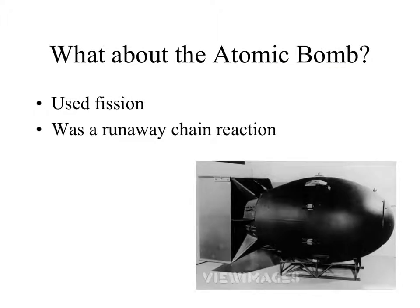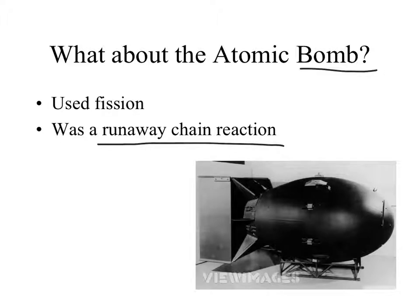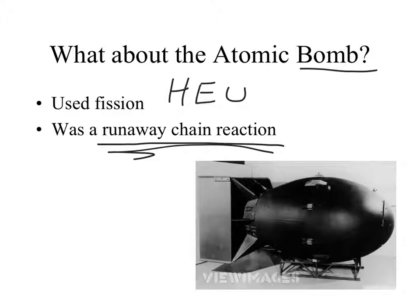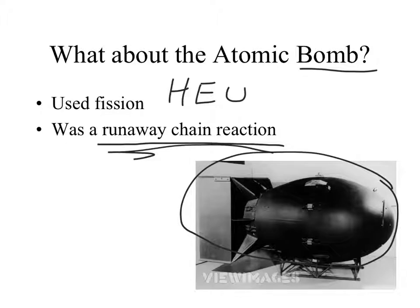Scientists realized this fission reaction could be used to make a bomb. If you create fission with enough highly enriched uranium — HEU — meaning enough uranium-235 in one place, you can create a runaway chain reaction. Here's a picture of the plutonium bomb, which is a runaway chain reaction — that was the second bomb dropped in World War II. Let's look at how these bombs work.